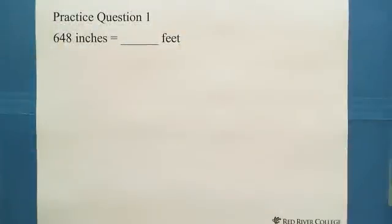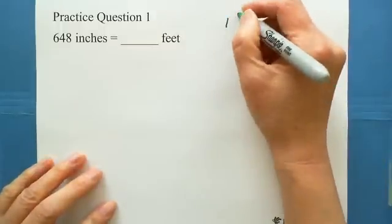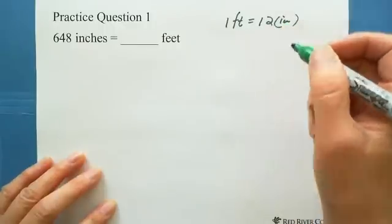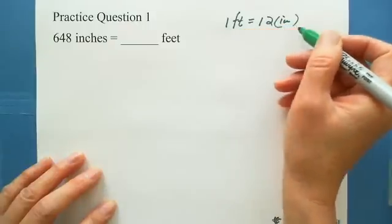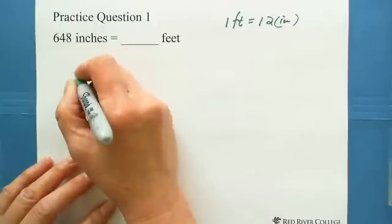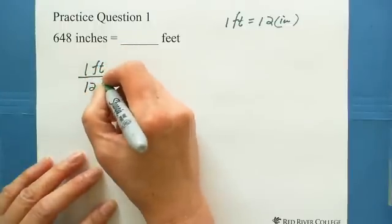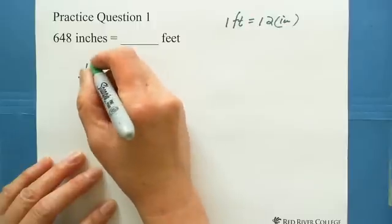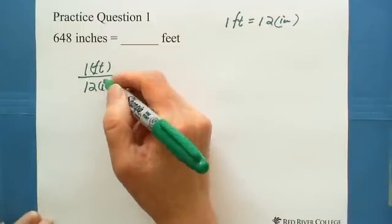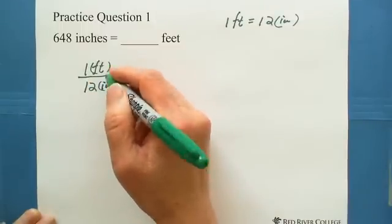The first practice question is 648 inches equals how many feet? As we know, 1 foot equals 12 inches. So we use this relationship ratio. 1 foot you can write on the top, 12 inches on the bottom. Also you can write 12 inches on the top, 1 foot on the bottom. The first ratio form, it doesn't matter which is on the top.